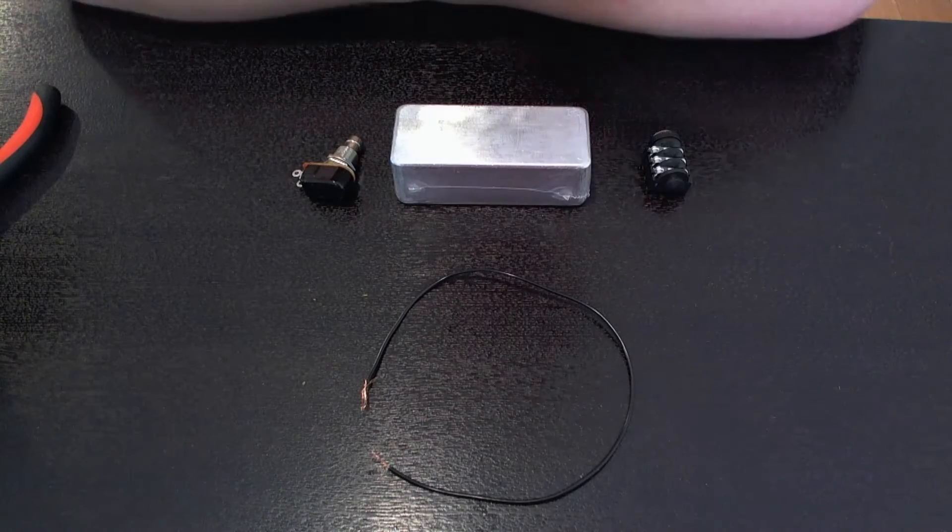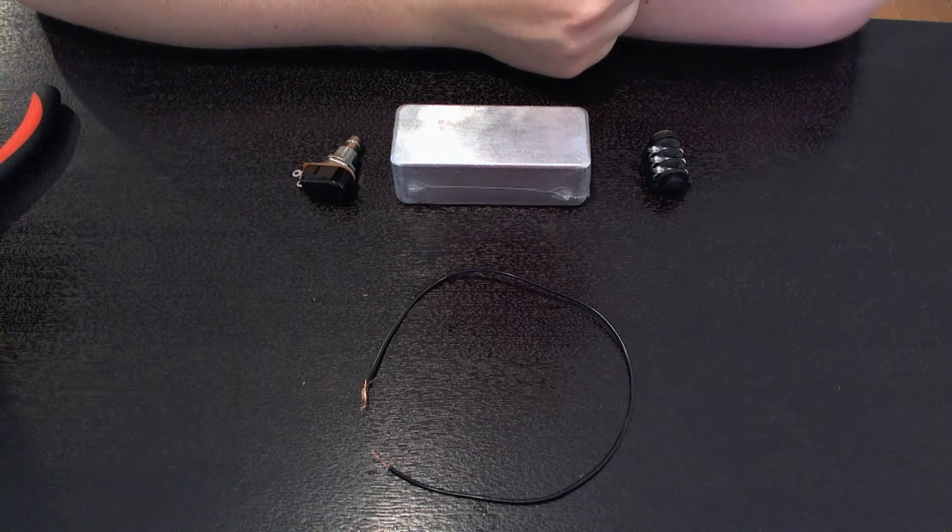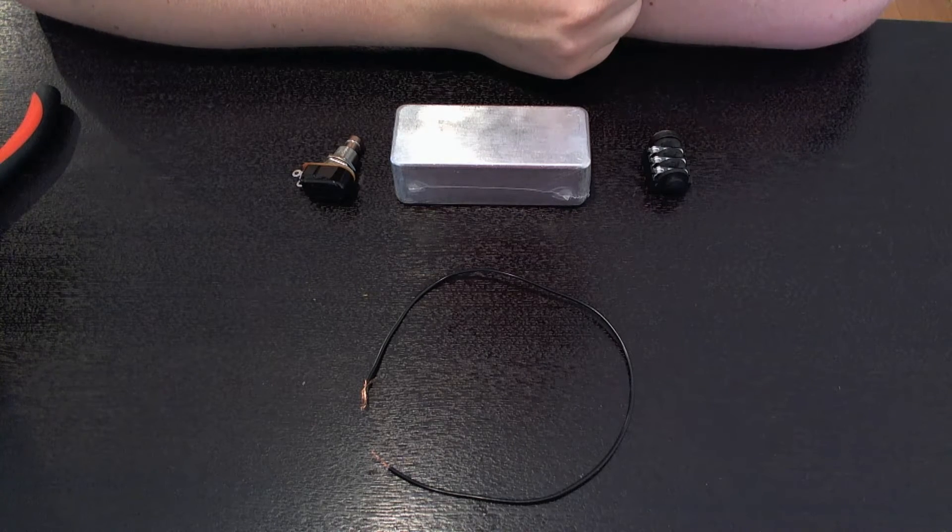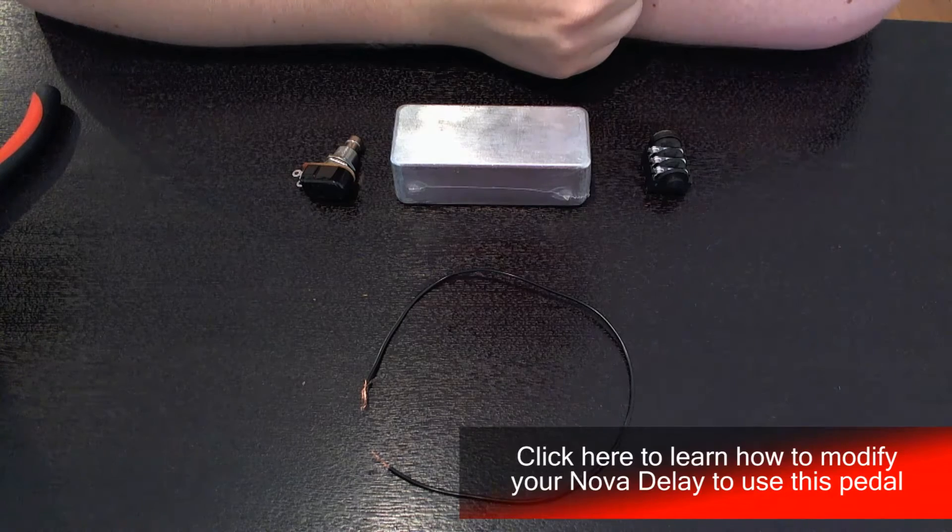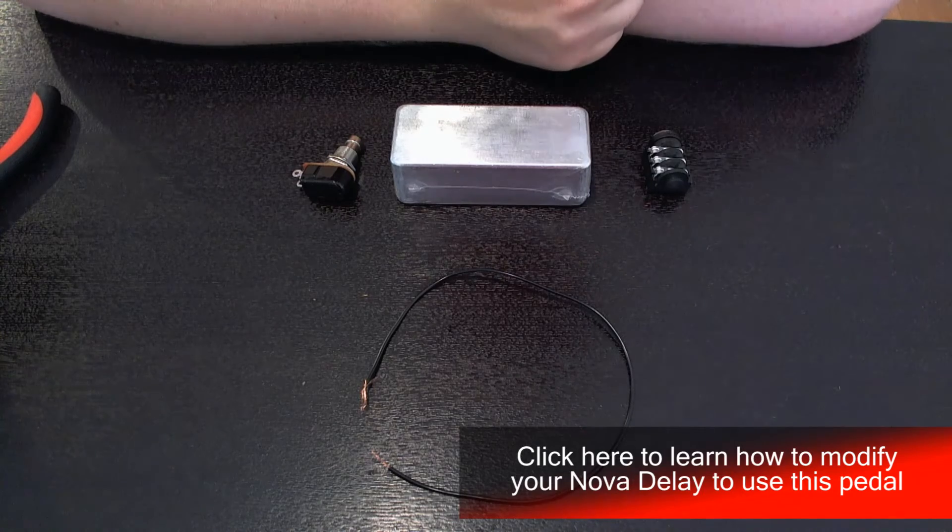Hi, today I'm going to show you how to build a tap tempo and preset selector footswitch for the TC Electronic Nova Delay modification that I did in my last video. Now this modification will also work with Boss units as well as the TC.